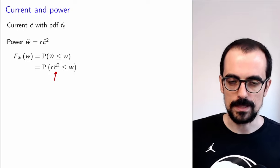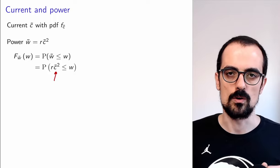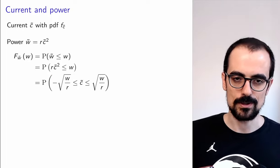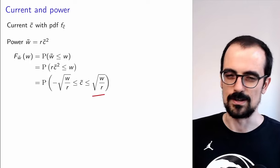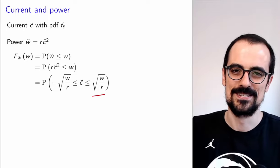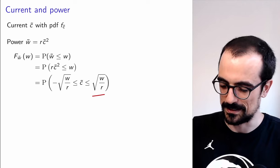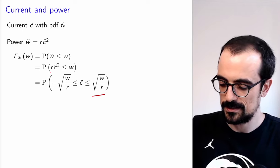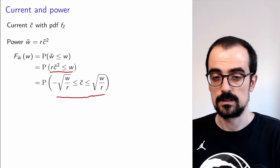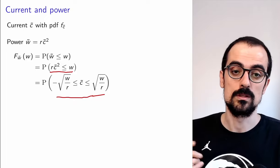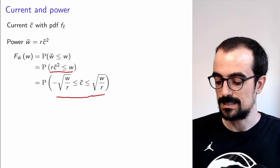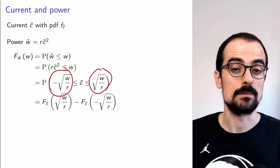Now we get an event in terms of the current: C² ≤ W/R. We think about what values of C satisfy C² ≤ W/R, and we realize that happens when C is between -√(W/R) and √(W/R). So this event is completely equivalent to -√(W/R) ≤ C ≤ √(W/R). Now we can integrate the PDF over that interval, or realize it equals the CDF evaluated at √(W/R) minus the CDF evaluated at -√(W/R).